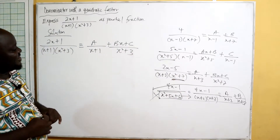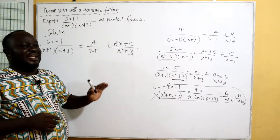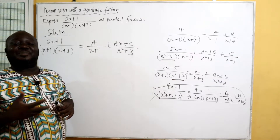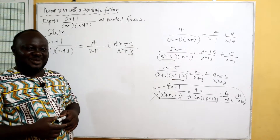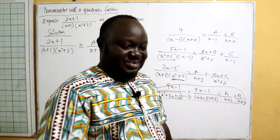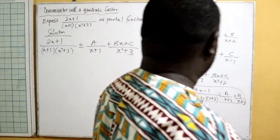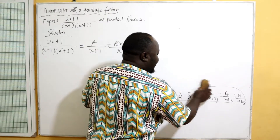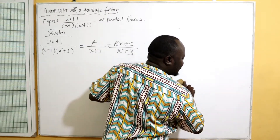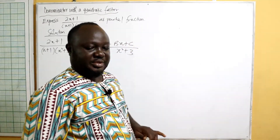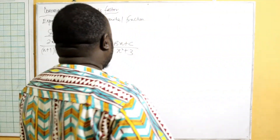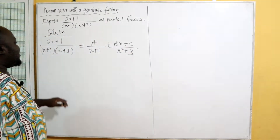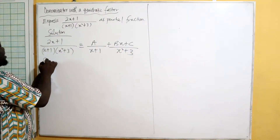We are going to solve this and get the values of a, b, and c, then replace them to get the partial fraction. Solving for a, b, and c: we have two x plus one over x plus one times x squared plus three. The LCM is x plus one times x squared plus three.